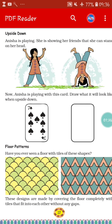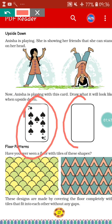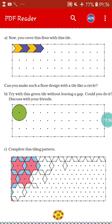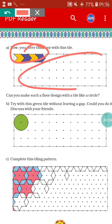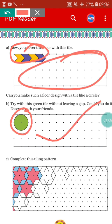Next is the upside down activity. Anisha is playing and showing her friend that she can stand on her head. Don't try — it is very difficult! In this way, you can try turning cards upside down and draw how the card looks upside down. Next, there are floor tiles — the shape of the floor tiles is given — and you can cover the floor with the tile design. With the help of the given design, you can complete the pattern.